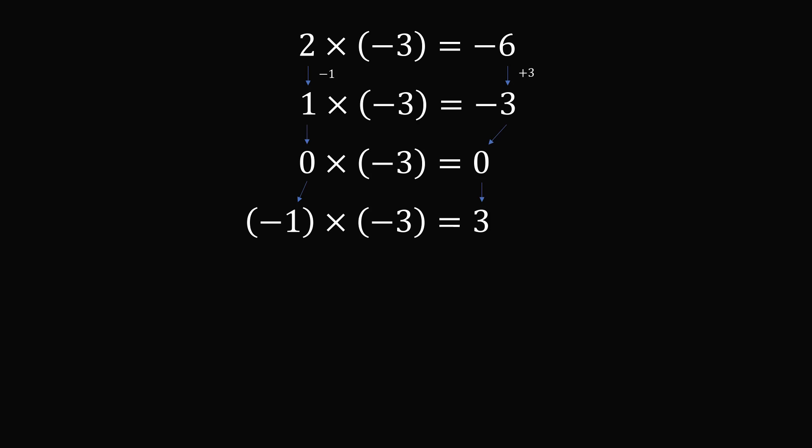Now just to make sure this property is true, let's extend the pattern by one more line. We decrease the first number, so we have negative 2 times negative 3. And this needs to increase the product by 3, so we have negative 2 times negative 3 is equal to positive 6. Each time we decrease the first number, we increase the product. So each time, a negative times a negative is equal to a positive.